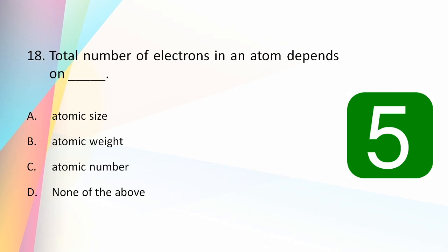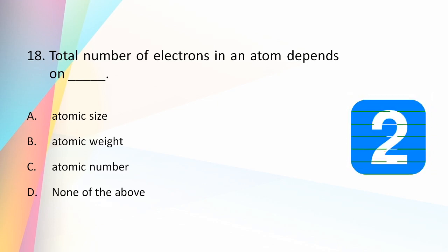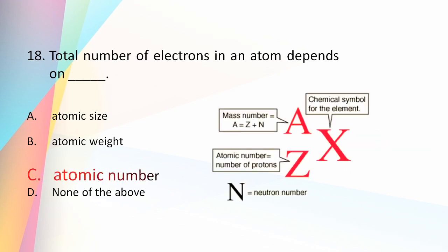The total number of electrons in an atom depends on the atomic number. The number of electrons equals the number of protons, and the atomic number is the number of protons in the nucleus — unique for every element. The mass number A equals Z plus N, where Z is the atomic number and N is the neutron number.